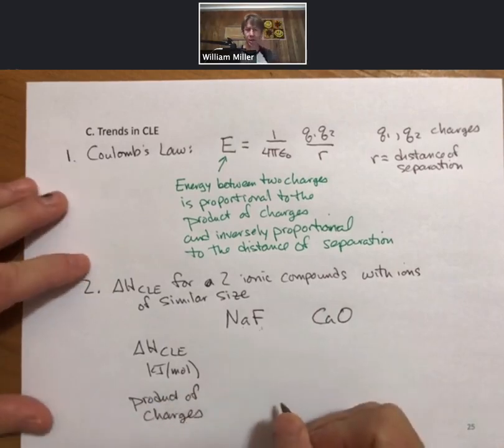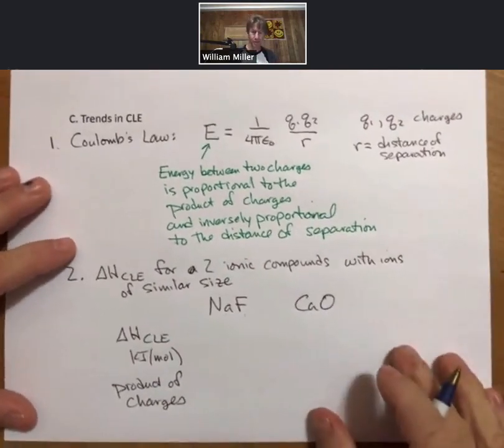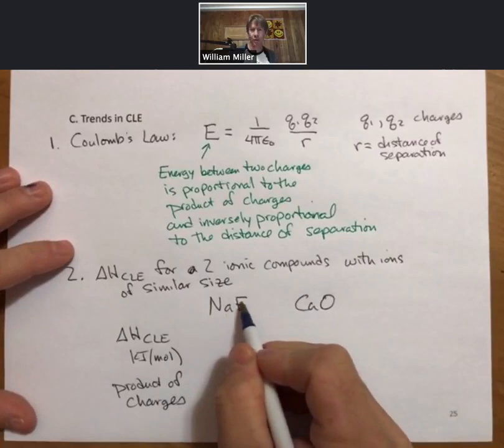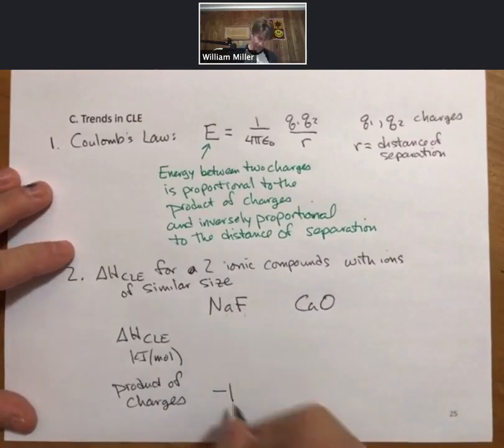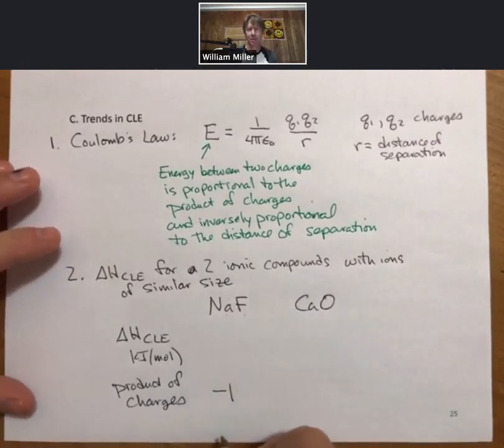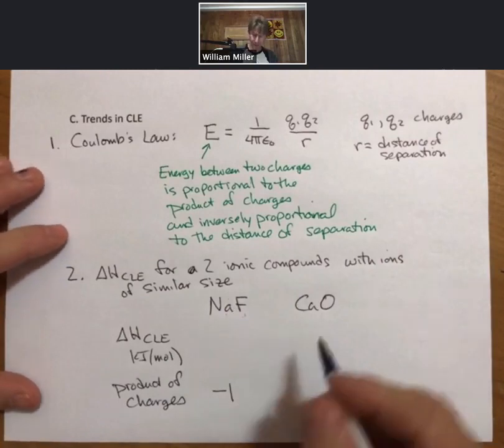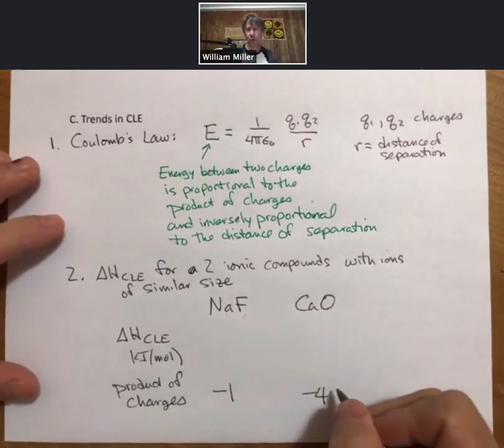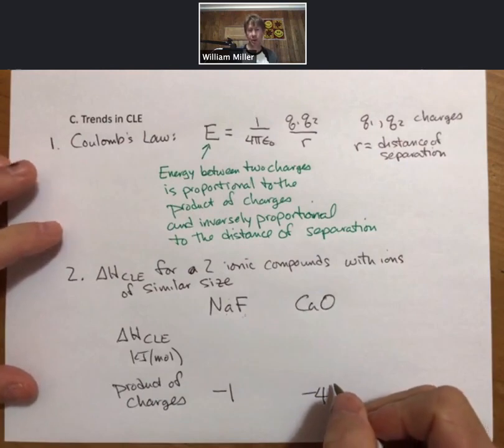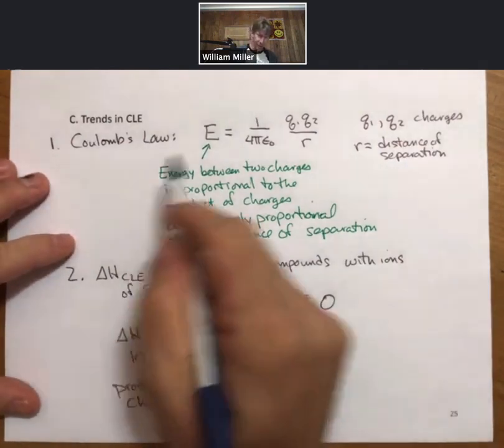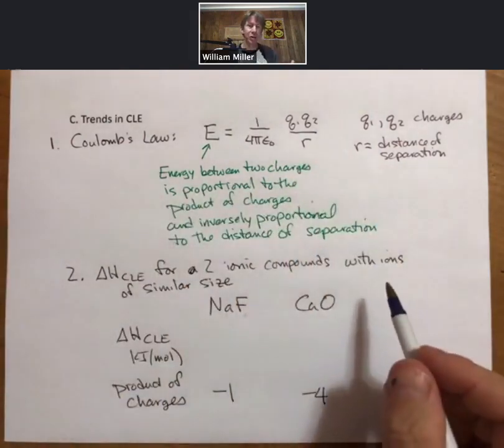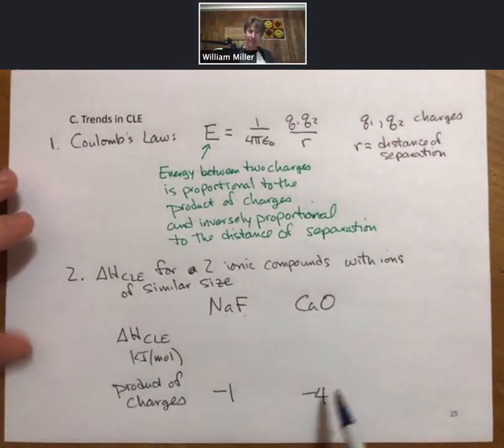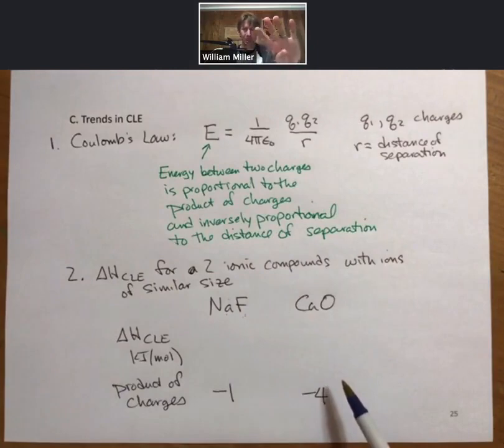We also look at their product of charges. Well let's look at their product of charges first. For sodium that's a plus one, for fluoride it's a minus one. Plus one times minus one is minus one. Plus two times minus two is minus four. So according to our theory of Coulomb's Law or what I'm proposing as the trends in crystal lattice energy, the crystal lattice energy of calcium oxide should be approximately four times larger.